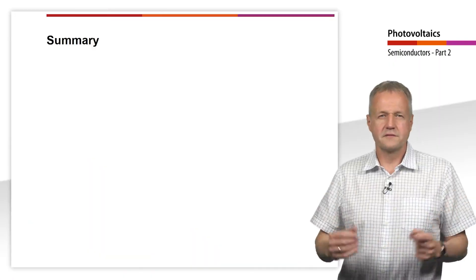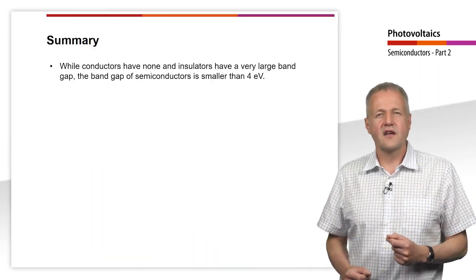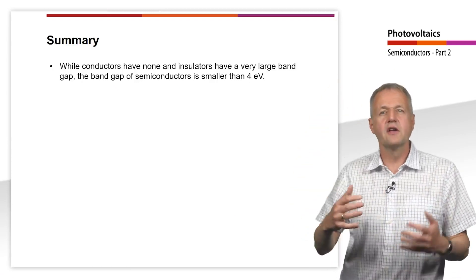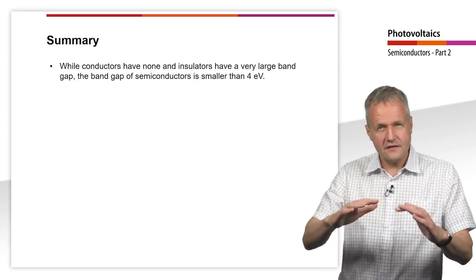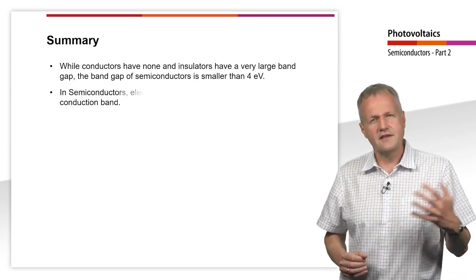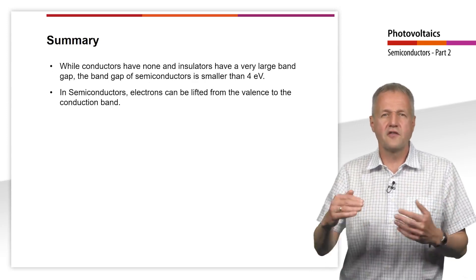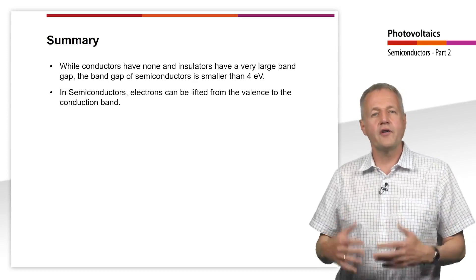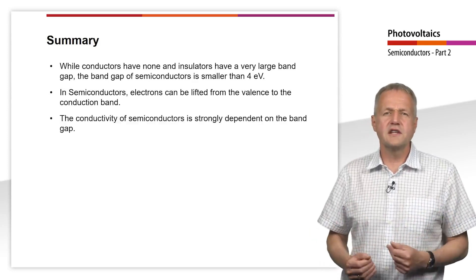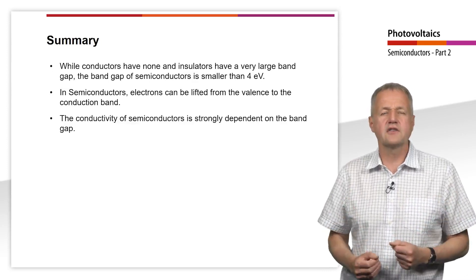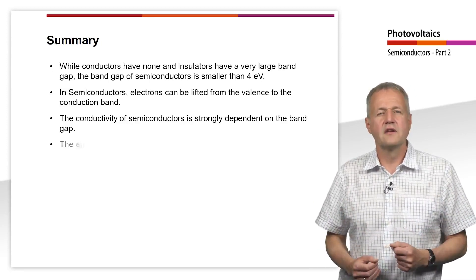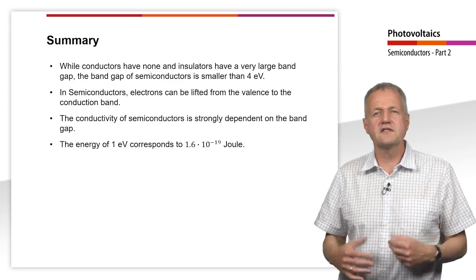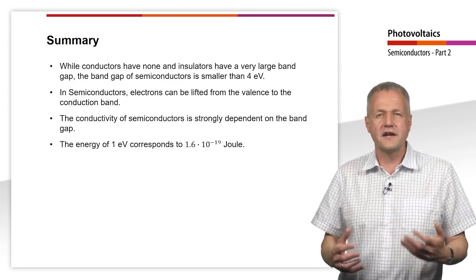We conclude. While conductors have no band gap and insulators have a very large band gap, the band gap of semiconductor is less than 4 eV. In semiconductors, electrons can be lifted from the valence to the conduction band by thermal energy or with the help of a photon. The conductivity of semiconductors is strongly dependent on the band gap. The energy of 1 eV corresponds to 1.6 times 10 to the power of minus 19 joules.